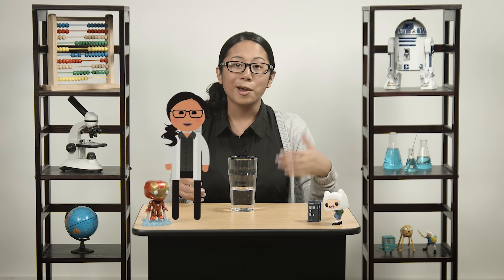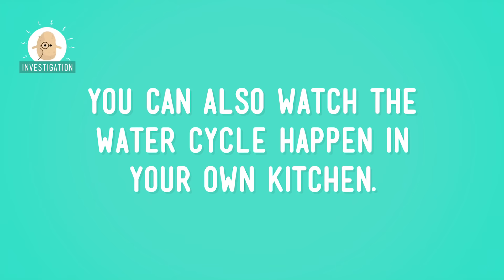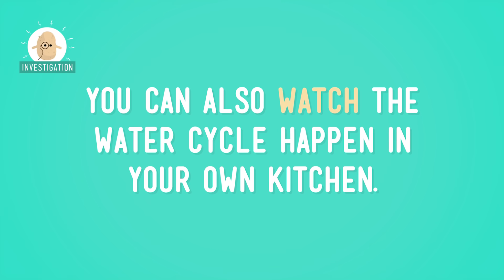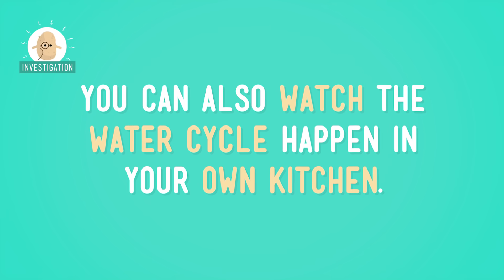This whole process — evaporation, condensation, and precipitation — is repeated over and over, moving water all around the world and powering weather events. We have the water cycle to thank for hurricanes, blizzards, and that rainstorm that caught me outside without an umbrella the other day. But you can also watch the water cycle happen in your own kitchen. Let's investigate.